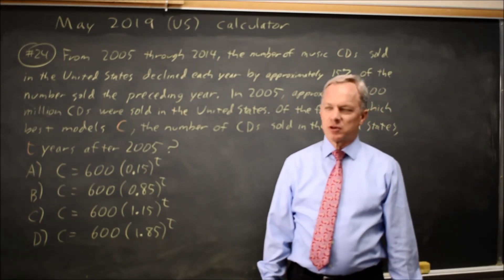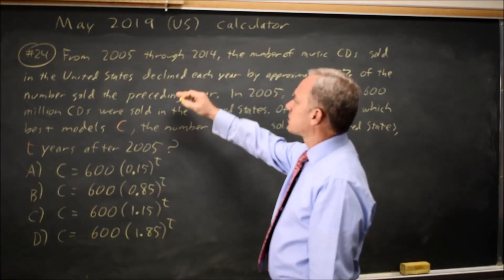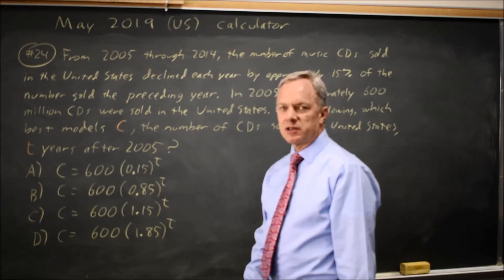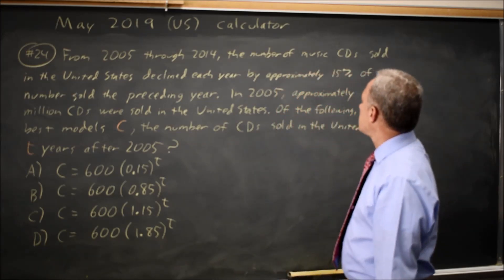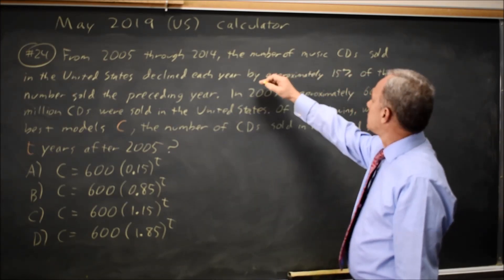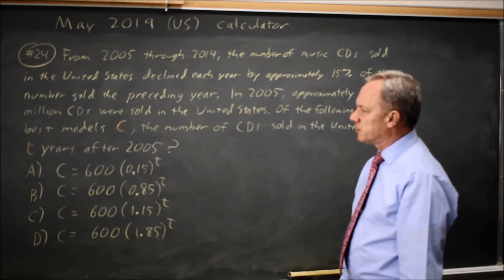This is calculator question number 24. College Board tells us about the sales of CDs in the United States, which declined by 15% of the numbers sold the preceding year each year.